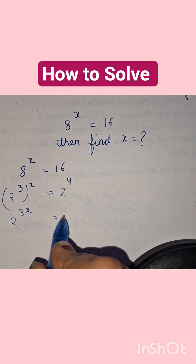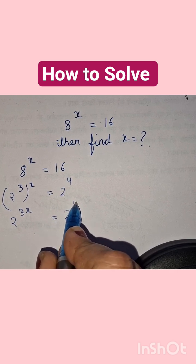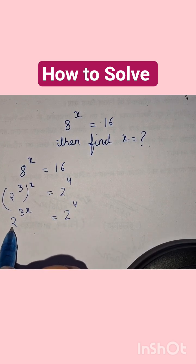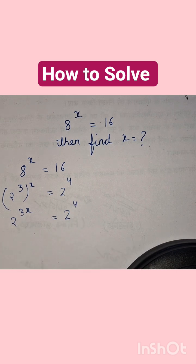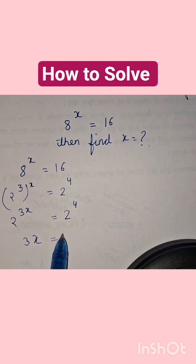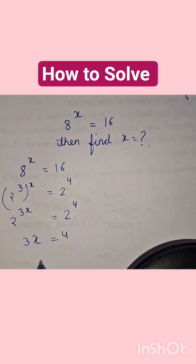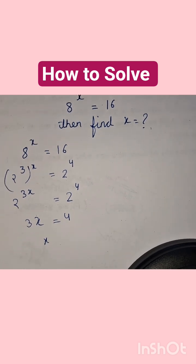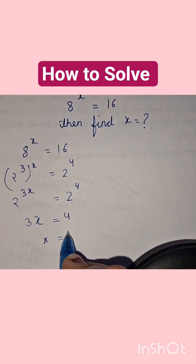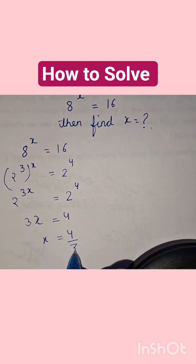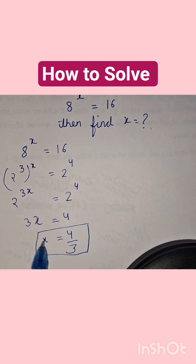Since both sides have the same base, we can write 3x equals 4, and therefore x equals 4 upon 3. So this is the value of x.